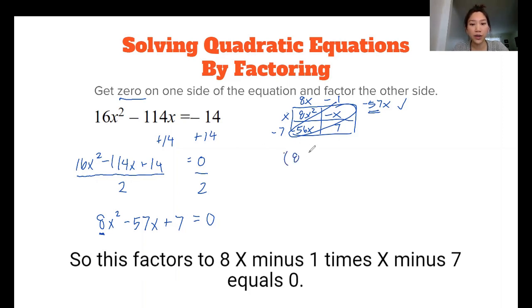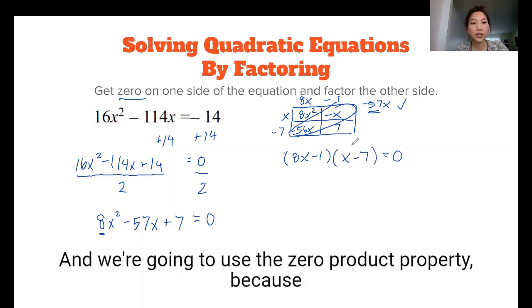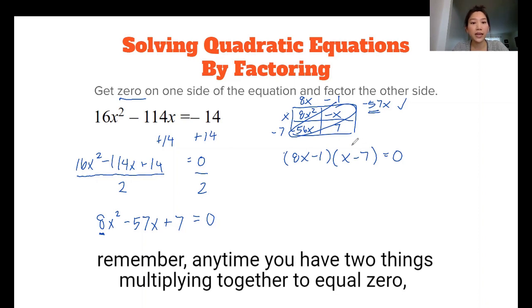So this factors to 8x minus 1 times x minus 7 equals 0. And we're going to use the zero product property. Because remember, anytime you have two things multiplying together to equal 0, that means that one of the factors is going to equal 0 or possibly both.